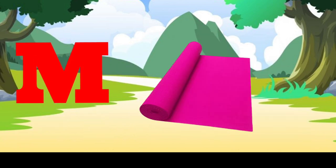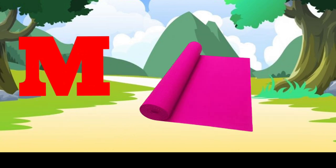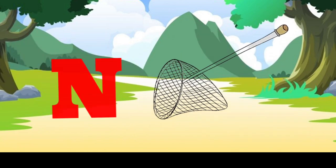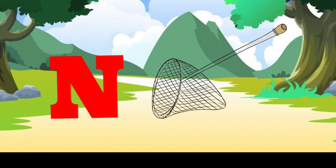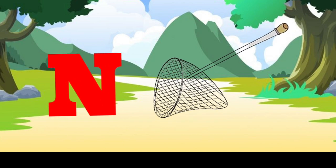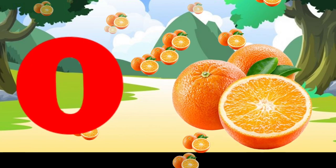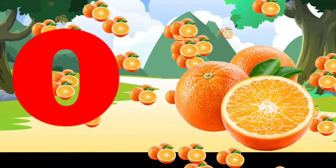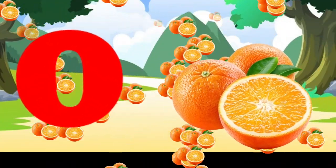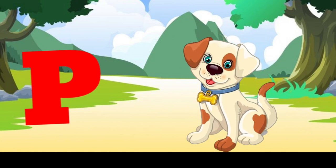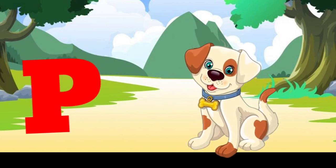M is for mat, m-m-mat. N is for net, n-n-net. O is for orange, o-o-orange. P is for pet, p-p-pet.